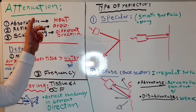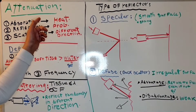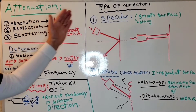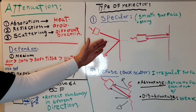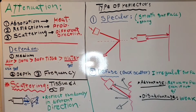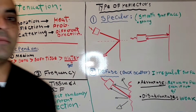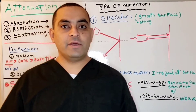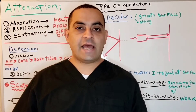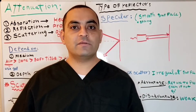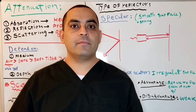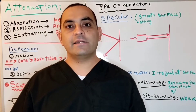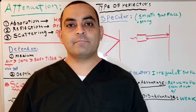In this lecture, we'll understand how attenuation happens and we'll talk about the types of reflectors. My name is Joe, and I help people understand ultrasound physics and pass the SPI exam.